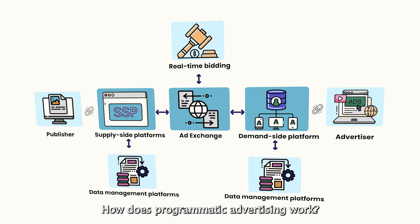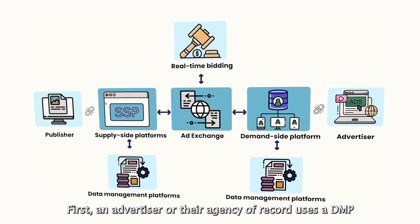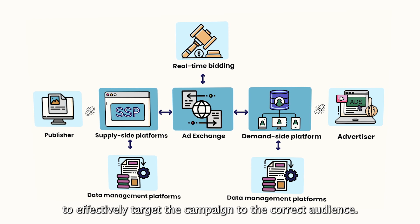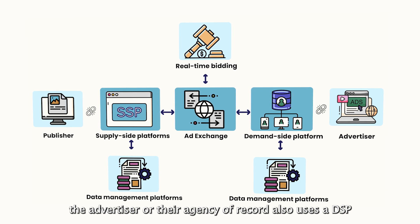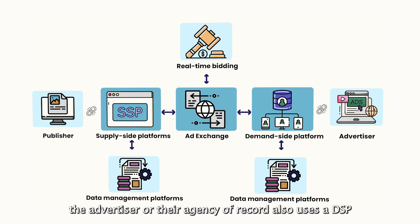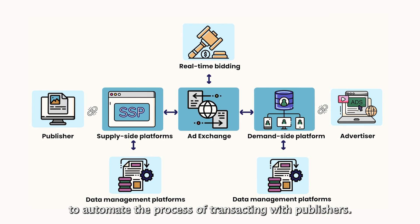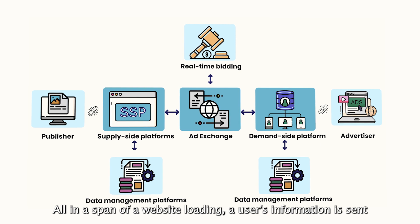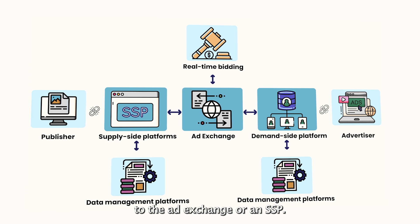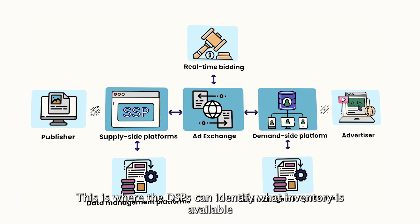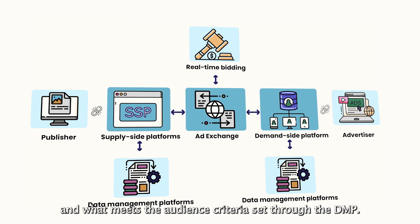How does programmatic advertising work? First, an advertiser or their agency of record uses a DMP to effectively target a campaign to the correct audience. The advertiser or their agency also uses a DSP to automate the process of transacting with publishers. All within the span of a website loading, a user's information is sent to the ad exchange via an SSP, where DSPs can identify what inventory is available.